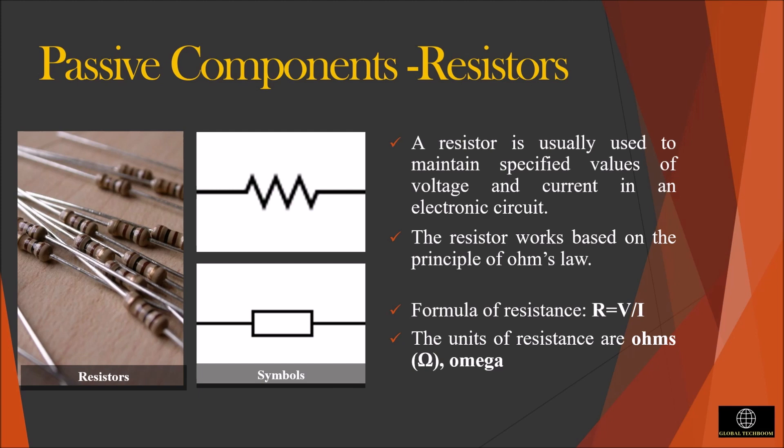The unit of resistance is Ohms. It is difficult to manufacture resistors with all the values, so some values are chosen and only those are manufactured. These are called as preferred values. So for practical use we select resistors with approximate values to match the required applications.